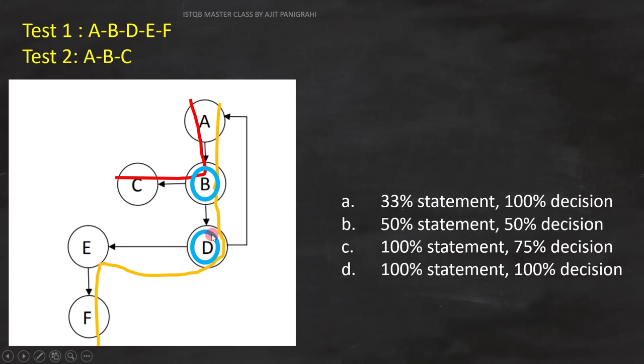Now let's analyze circle D. Here outcome D to E is covered. But outcome D to A is not covered. That means one condition is covered and one is not covered.